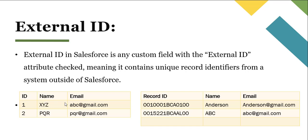In this example, the external file doesn't have the Salesforce record ID, but we want to perform an update or upsert operation. This is where the external ID comes into the picture. We can make the Email field in the Salesforce org an external ID, so when we upsert records, the email field maps with its counterpart, and if the email matches, the values from the external system replace those in Salesforce. For example, in the first table we have ID 1, name XYZ, and email abc@gmail.com.